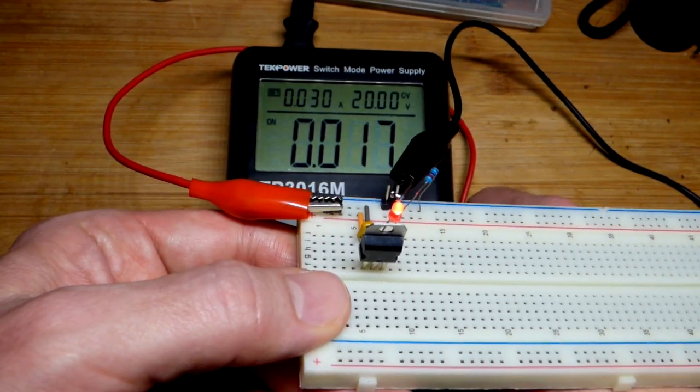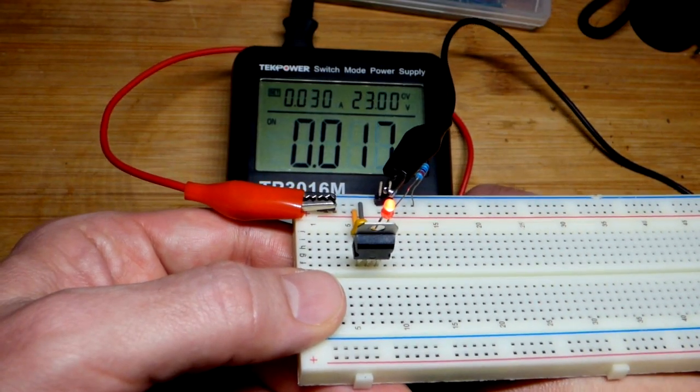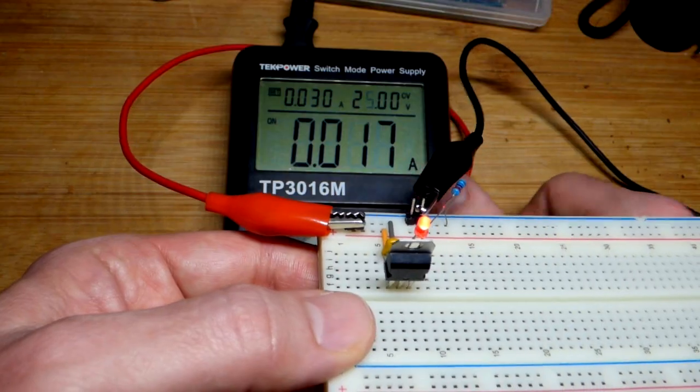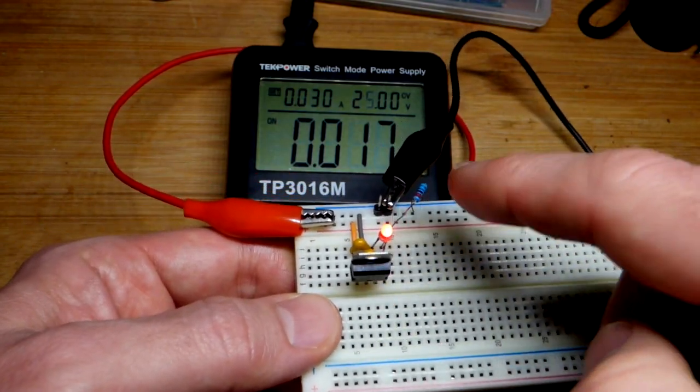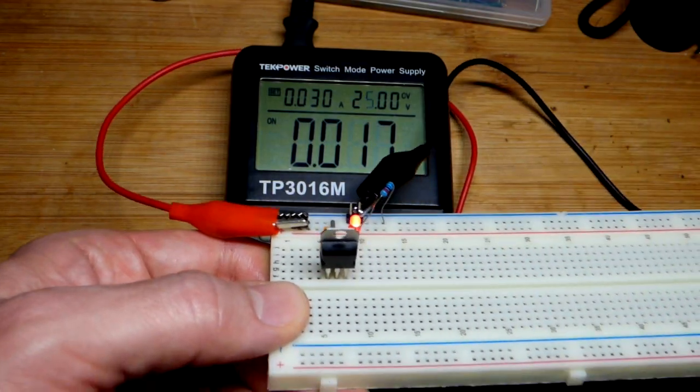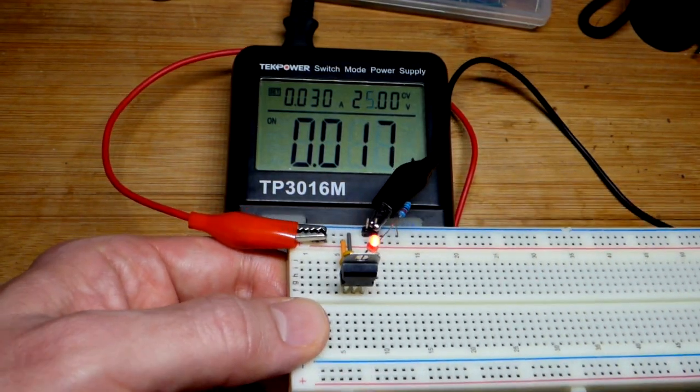As I raise the supply voltage, other than some spikes when it's adjusting, you can see the current remains steady. That's the current going through the load. The only way the current could remain steady like that is if there's a steady voltage of about 5 volts across it.